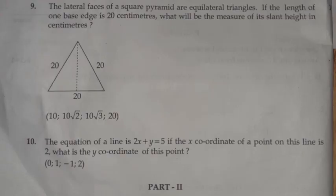Question 10: The equation of a line is 2x plus y equal to 5. If the x coordinate of a point on this line is 2, what is the y coordinate of this point? Options: 0, 1, -1, 2. Answer: y equal to 1.